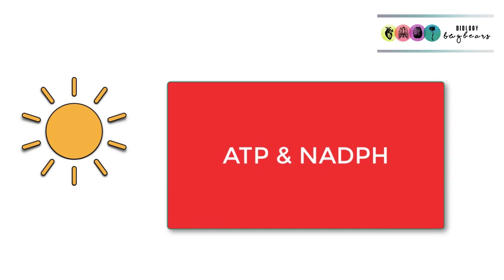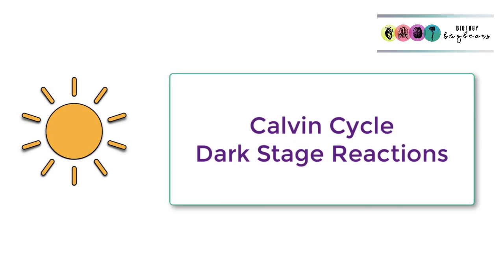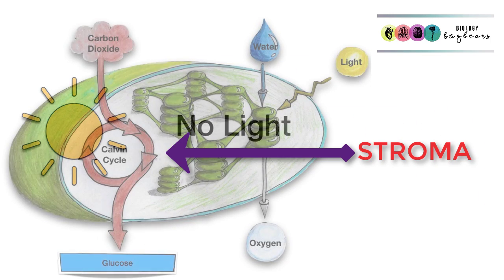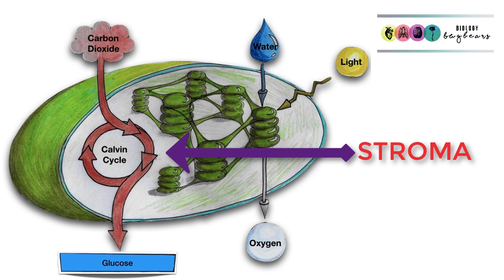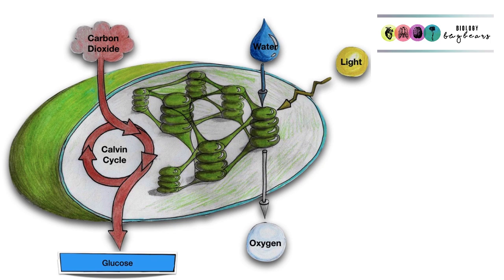It's otherwise referred to as the Calvin cycle or the dark stage reactions. The Calvin cycle or the dark stage reactions take place in the stroma of the chloroplast. This contains many enzymes, and so all the factors that affect enzyme-controlled reactions, such as temperature and pH, they can impact the reactions of the Calvin cycle.